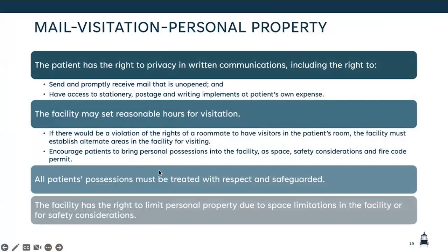Patient rights related to mail, visitation, and personal property: the patient has a right to privacy in written communication — they can send and receive mail. We need to have a policy or procedure around the receipt and sending of mail, and if a patient requests something to write with, postage, or stationary paper, we need to be able to provide that. We need to have hours for visitation as well. Making sure patients' possessions are treated in a respectful way and safeguarded. We do have the right to limit personal property due to space limitations within the facility or safety considerations — so somebody can't bring in their lazy boy recliner, and we can likely refuse that.